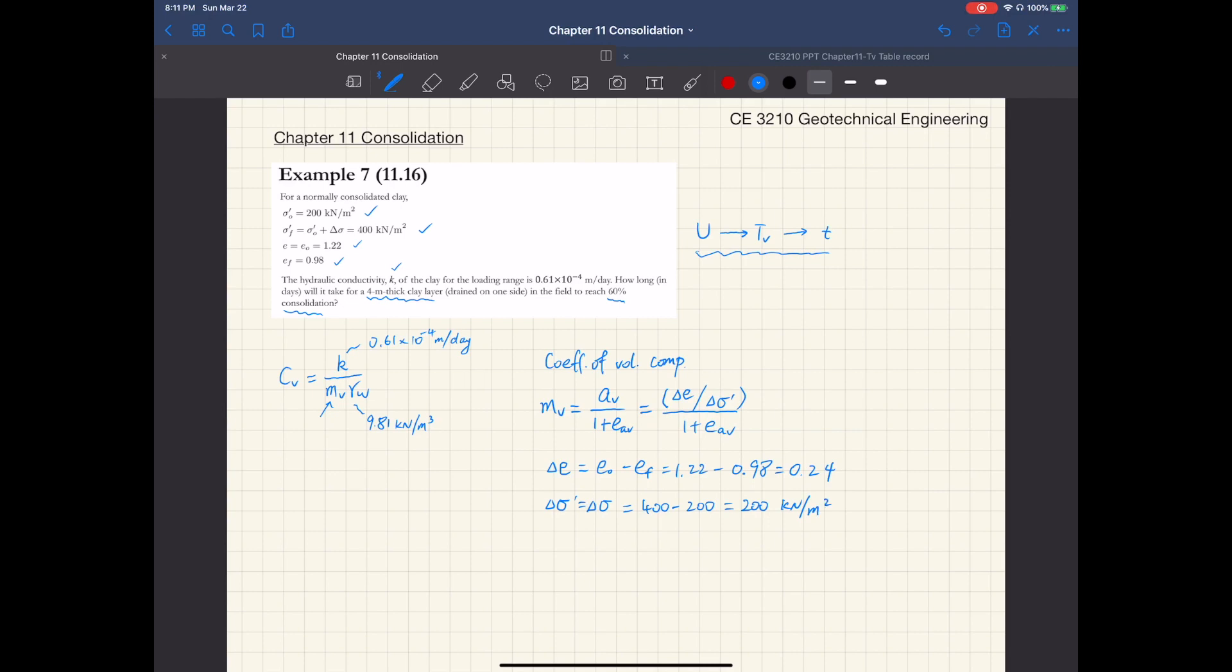For the average void ratio in the equation, we're going to use the average of the initial and the final, E0 plus EF. If you plug in EF and E0, so 1 over 2 times 1.22 plus 0.98, that's 1.1.